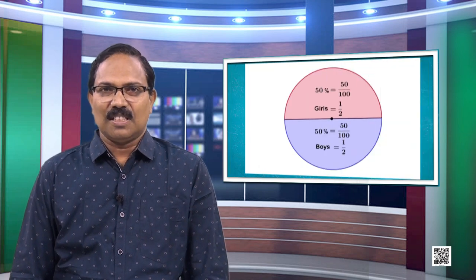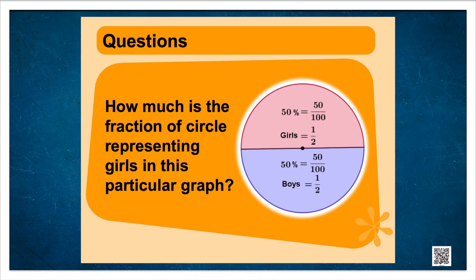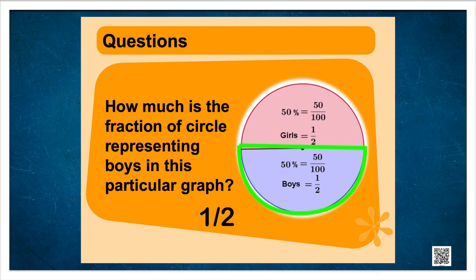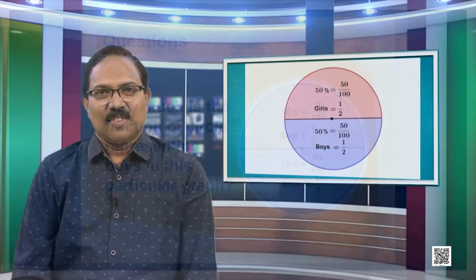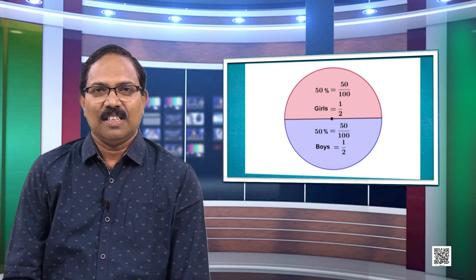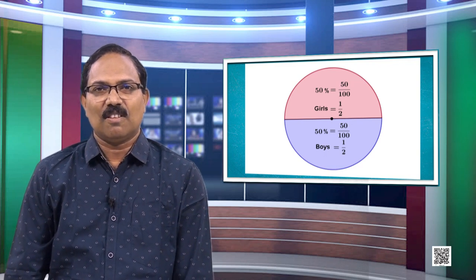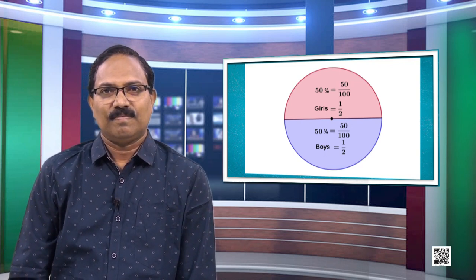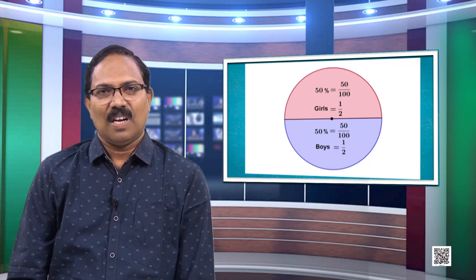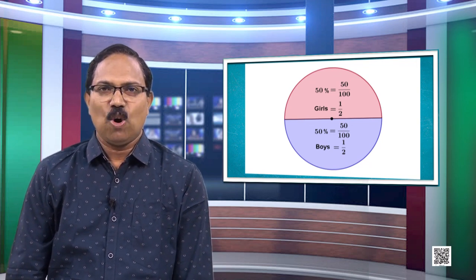Look into the figure given here. The fraction of the circle representing girls is half, and the fraction representing boys is also half. The relationship between boys and girls in this graph is half and half, making a whole.